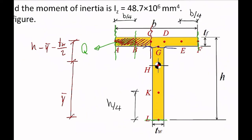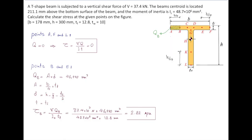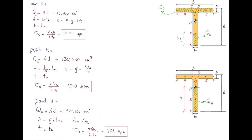Which of these points will have more shear stress? Is point G always having more shear stress than point C? That depends on the thickness. Shear flow at G is always greater, but shear stress depends on the thickness — so we need to check the ratio between Q and T at each point.